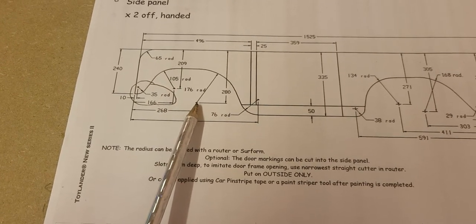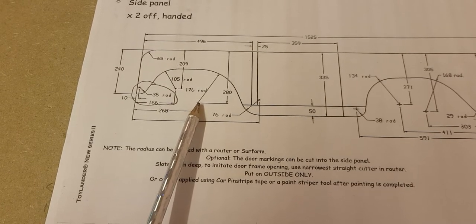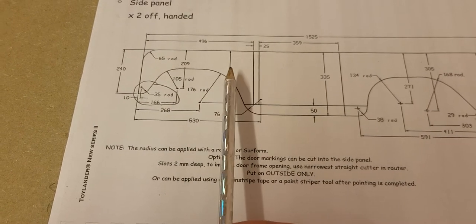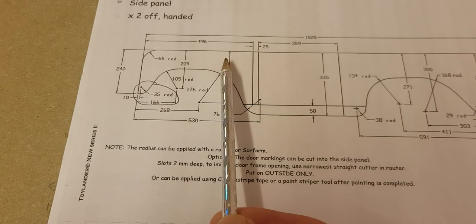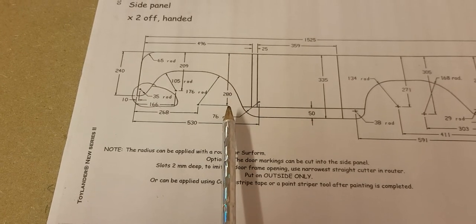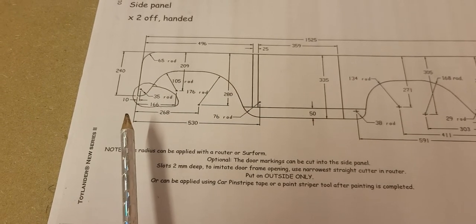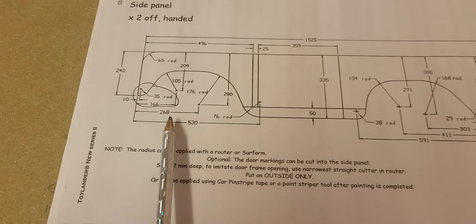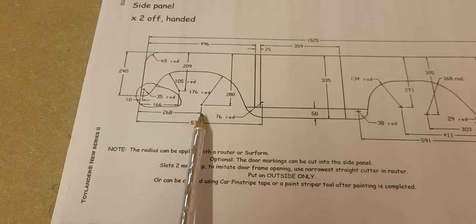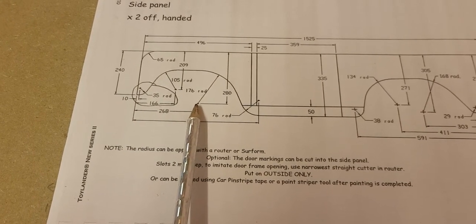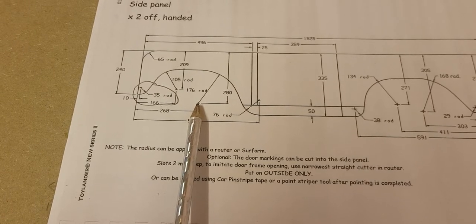And your next one is there. So it's 280mm from the top of the panel and 268mm from the front of the panel. So that gives you a third starting point for your radius.